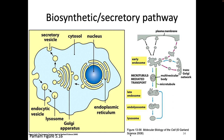Either way, we're going to end up with our material in late endosome or lysosome-like compartments, whether we came in via receptor-mediated endocytosis or by phagocytosis. The good news is that we're already in the secretory pathway. We don't really have to do much work to get into the secretory pathway because we actually brought stuff in through this pathway. All of these vesicles — early endosome, late endosome, lysosome — are connected to one another.